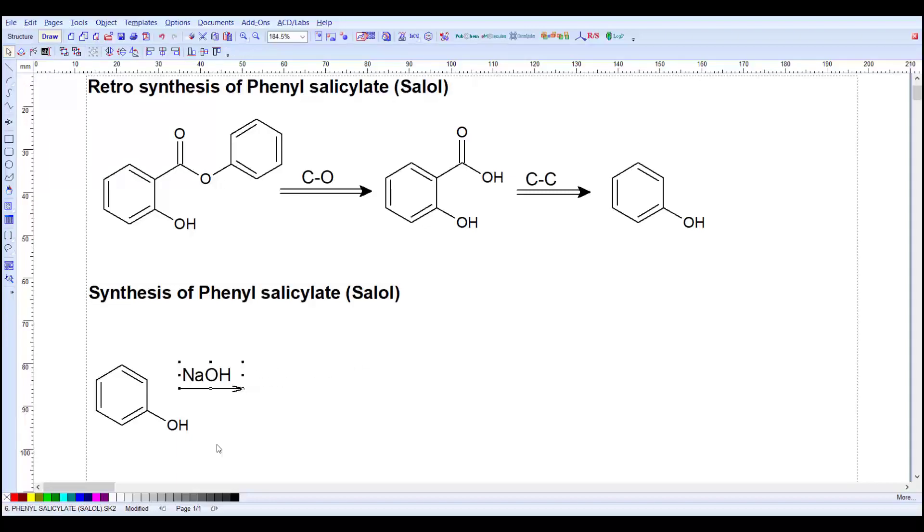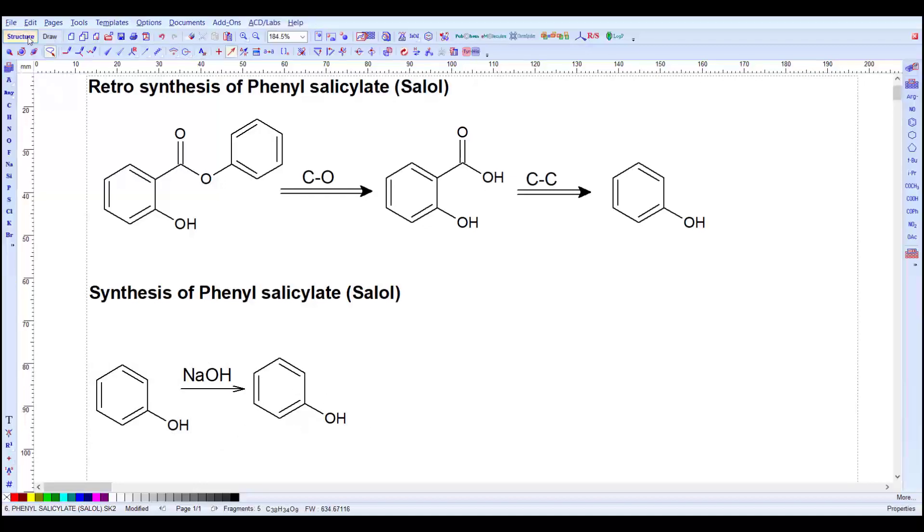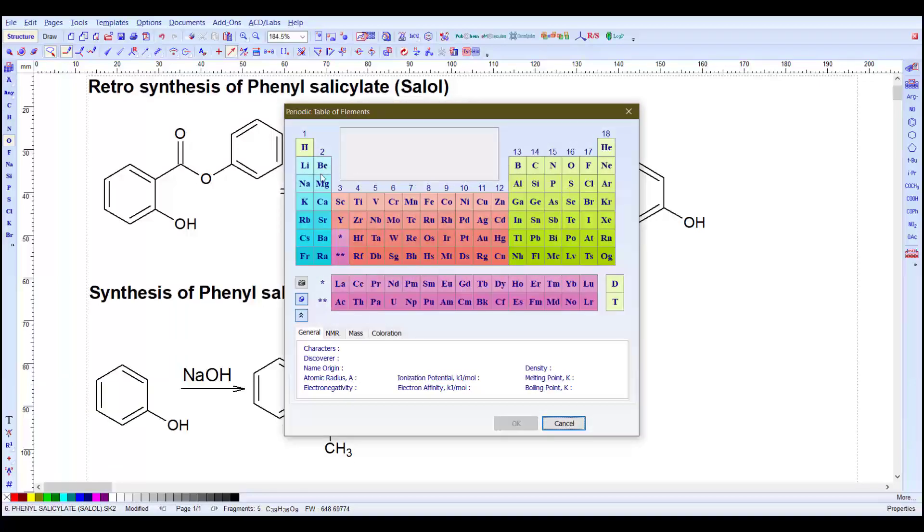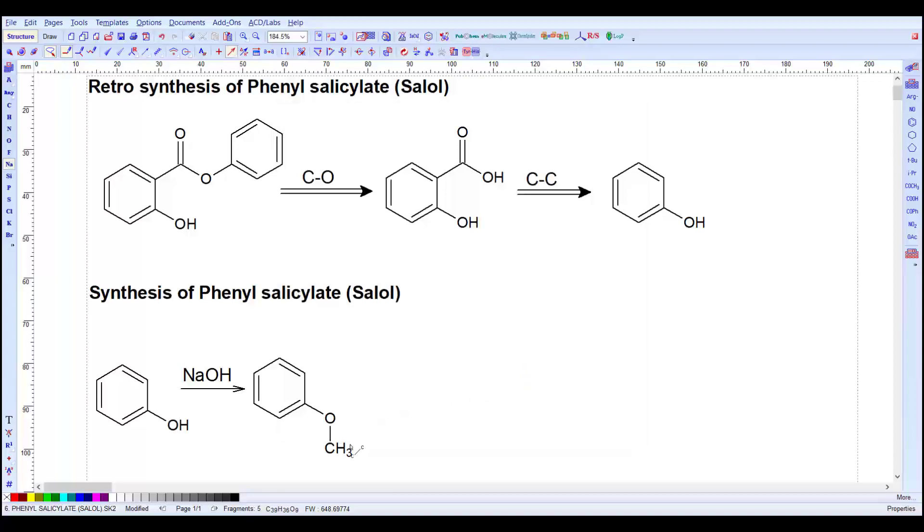Next from NaOH we have to prepare sodium phenoxide ion. We have to prepare phenoxide. Just copy this, paste it, and align with this one. Here we have to add Na atoms. Let's press OH here and then pick the sodium atom. Press OK and use it here. So there is ONa, sodium phenoxide ion. Now add the arrow.